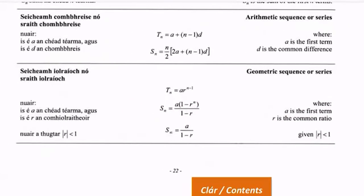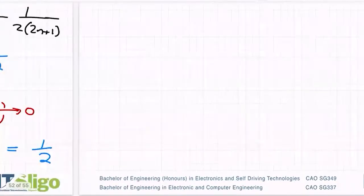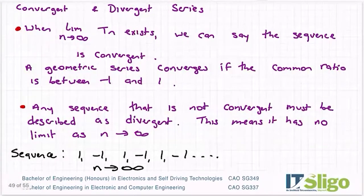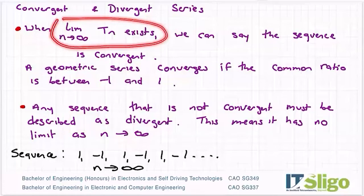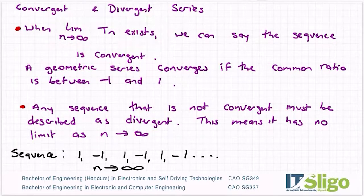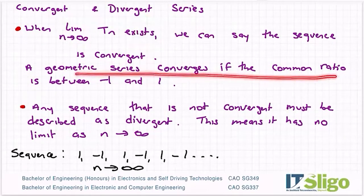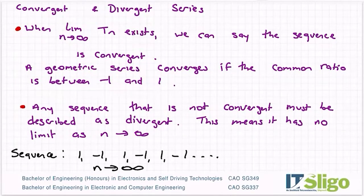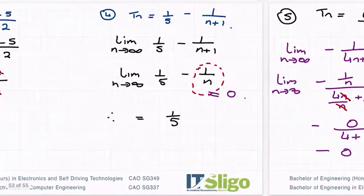Also in the log tables at the bottom there is the sum to infinity formula: S to infinity equals a over one minus r. An important note here is that this requires the modulus of r to be less than one — in other words, minus one is less than r is less than one. So the sign doesn't matter; it's when r is between minus one and one. Going back to the theory of convergent and divergent series, if a limit to infinity exists we can use the sum to infinity formula, because a geometric series converges if the common ratio is between minus one and one. If not, the series is divergent, so this formula only works for convergent series.